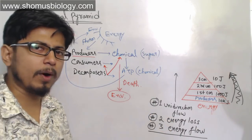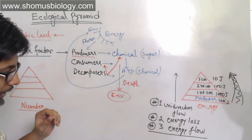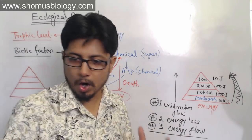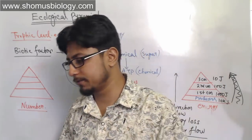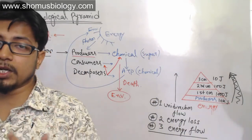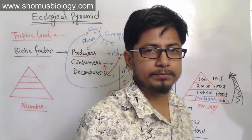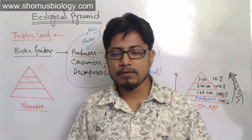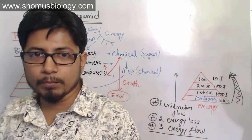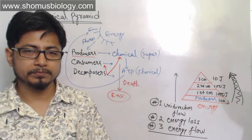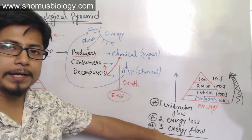These two laws — unidirectional flow and energy loss — are actually the laws of thermodynamics. The very first law states that energy can neither be created nor destroyed; it can only be transferred from one mode to another. That is exactly what is happening in this energy flow.